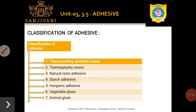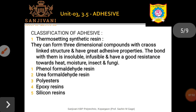Next is the classification of adhesives. Adhesives are classified on the basis of chemical nature into seven types: first, thermosetting synthetic resins; second, thermoplastic resins; third, natural resin adhesives; fourth, starch adhesives; fifth, inorganic adhesives; sixth, vegetable glues; and seventh, animal glues.